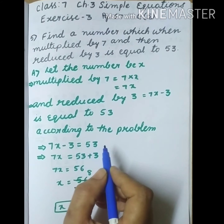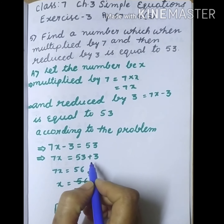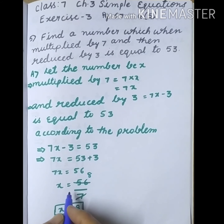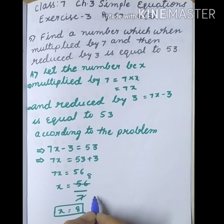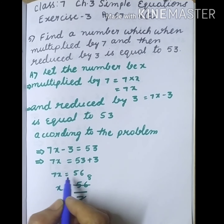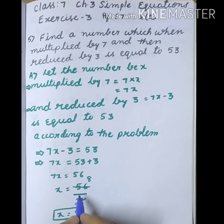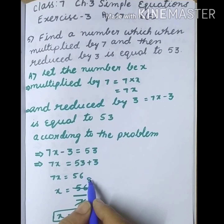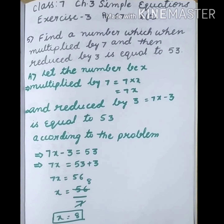This minus 3, if I transpose to this side, we are getting plus 3. Now 7x equals 53 plus 3, which gives us 56. Now x equals 56 by 7 — why divided by 7? Because the relation between 7 and x is 7 into x. Transposing to this side, we get x equal to 56 divided by 7, which is x equal to 8.